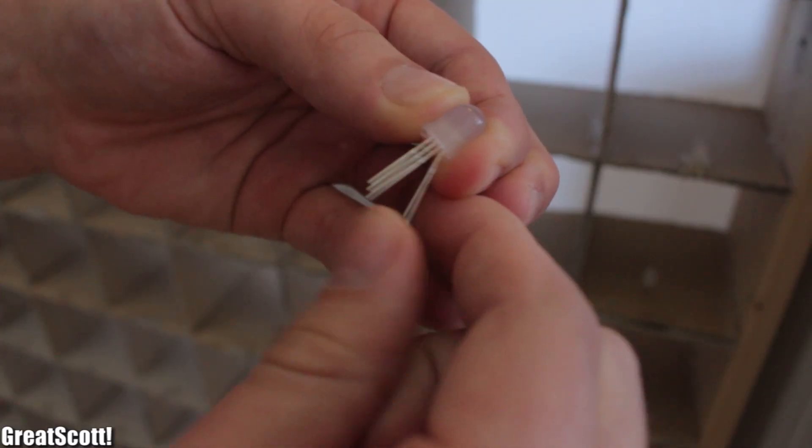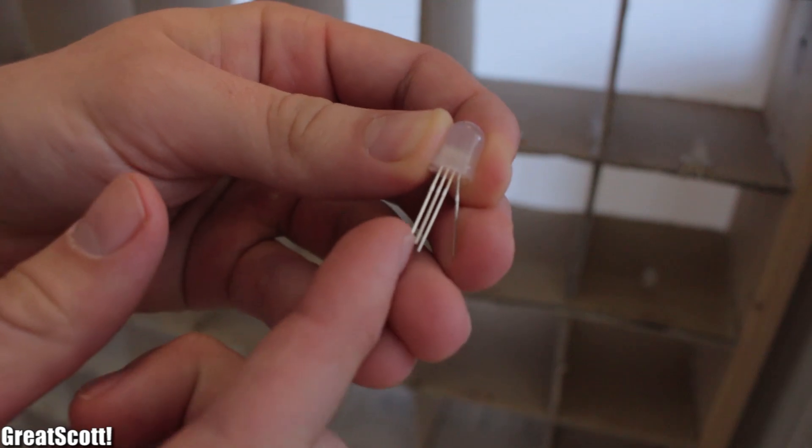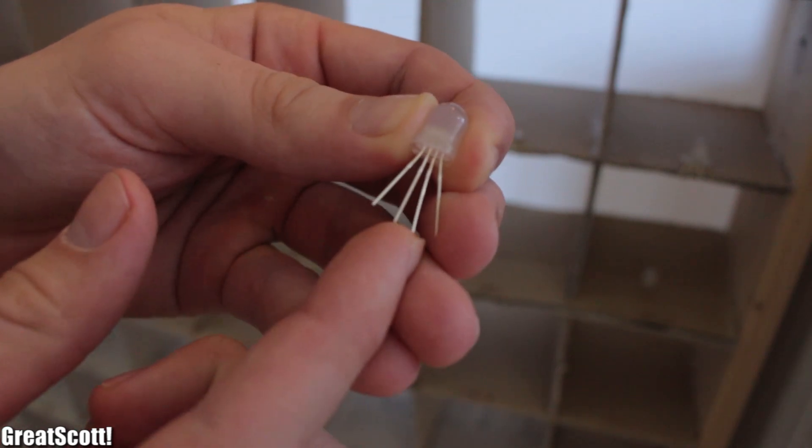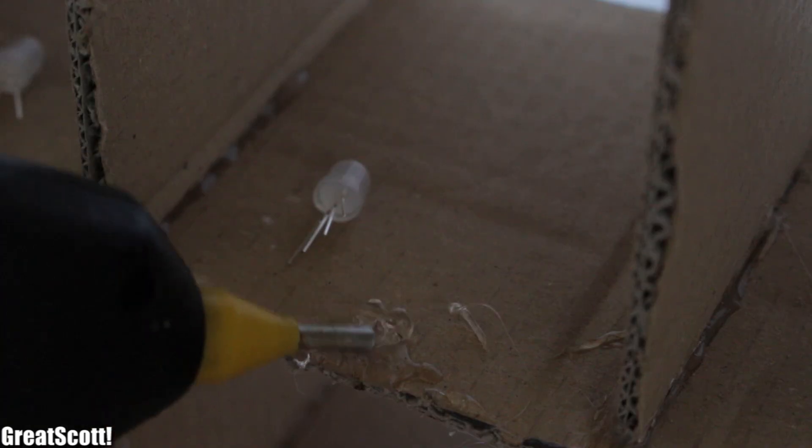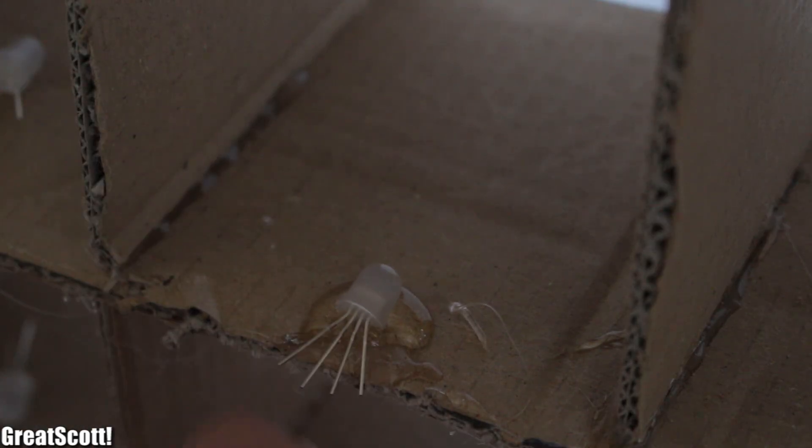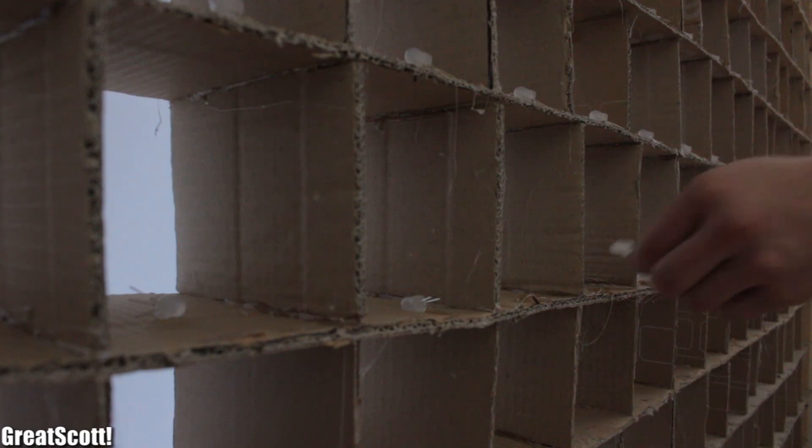At first I spread the 4 pins of those 150 LEDs a bit apart, so that soldering to them will be a bit easier later on. Then I put a drop of hot glue in a square and positioned my LED with the flat side left inside the glue.